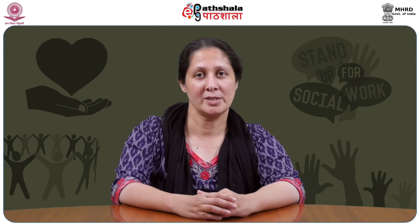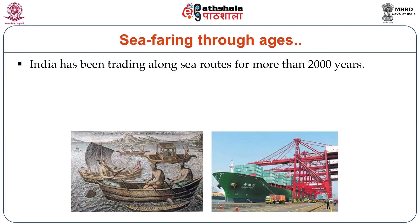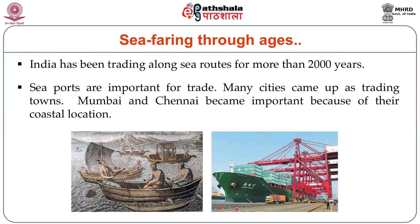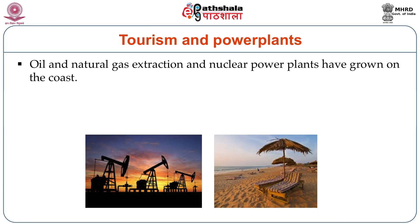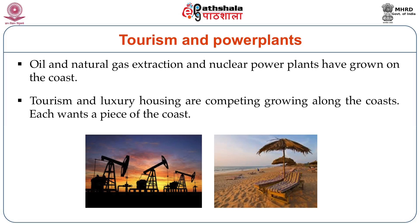Coastal agriculture includes growing rice on large coastal areas. There is also horticulture — dense groves of coconut and areca nut are seen along the coastal areas. In Kerala, coasts have large plantations of spices. India has been trading along the sea routes for more than 2,000 years. Seaports are important for trade. Cities came up first as trading towns. Mumbai and Chennai became important because of their coastal locations. Oil and natural gas extraction industries are seen along the east and west coast, and there are places where nuclear power plants are being built. Tourism and luxury housing are also competing for growing along the coast.